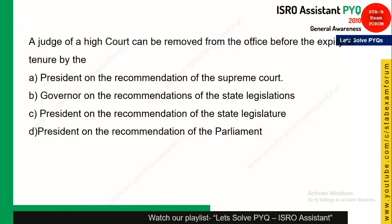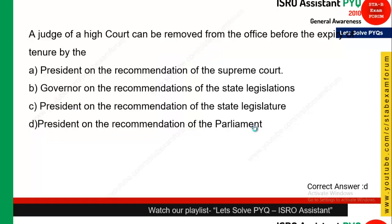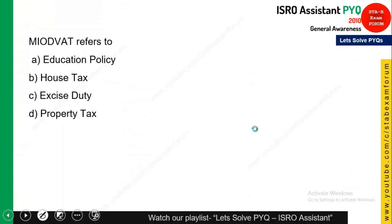A judge of the High Court can be removed from office before the expiry of his tenure by — as you know, there is a procedure called impeachment. In impeachment, there is a discussion in Parliament and the number of candidates who favor impeachment — that recommendation goes to the President for the final signature. So it is done by the President on the recommendation of Parliament.